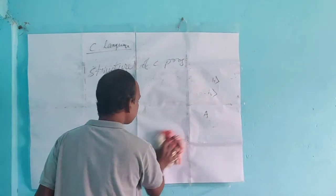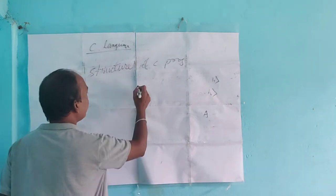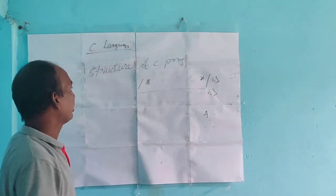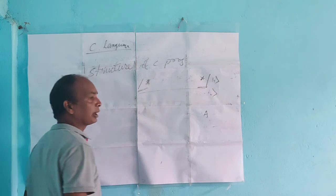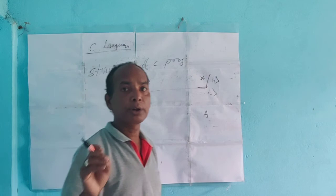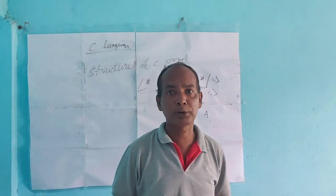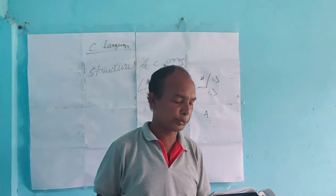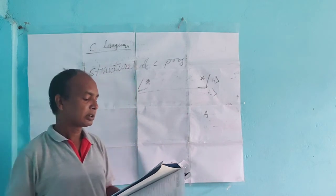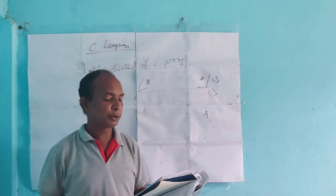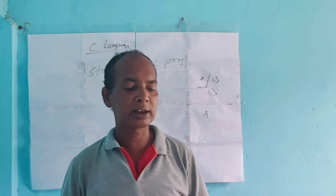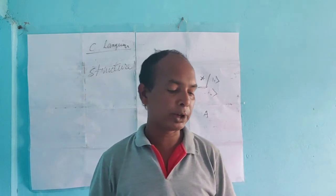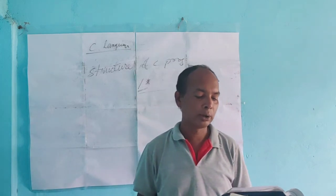In C, whatever you write between the symbols slash-star and star-slash is a comment. Comments are not executed in the program — they are only for general information about the program. You can place comments at the top, bottom, or middle of a program, but they will not execute. A comment line is not translated by the compiler into machine language; the compiler simply ignores comment lines. Comments are used by programmers to include short explanations within the source code for better understanding and readability.